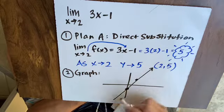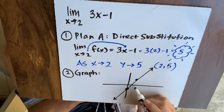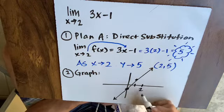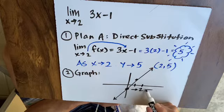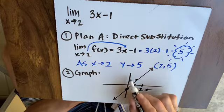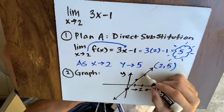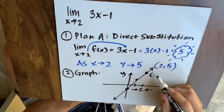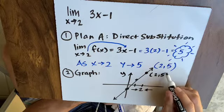So this is what our graph looks like. And we are saying as x squeezes in on 2, where is y trending towards? And because direct substitution works, you can see we get this point, 2, 5.